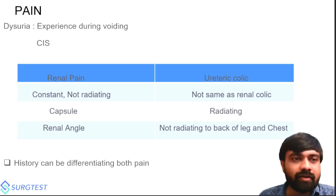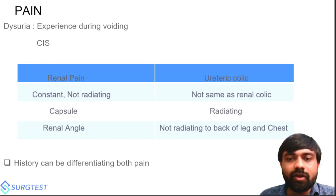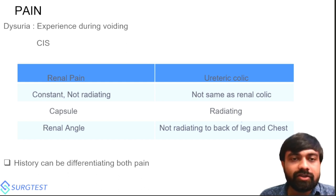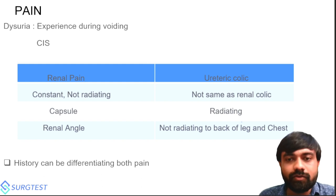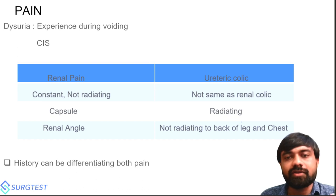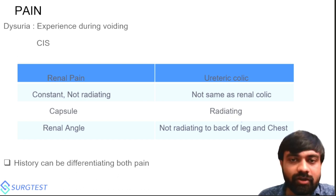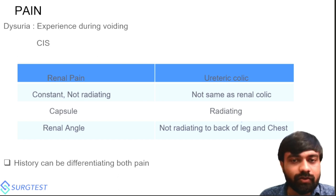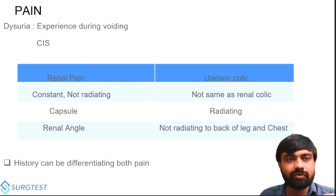In the pain section, the first word is dysuria. Dysuria is experienced during voiding — the term voiding is important. Dysuria is not experienced when the bladder is full; it is experienced during voiding. Another important point: when the patient has carcinoma in situ (CIS), the typical symptom is dysuria. So in a case scenario question, when you find carcinoma in situ and dysuria together, you should think about carcinoma in situ.